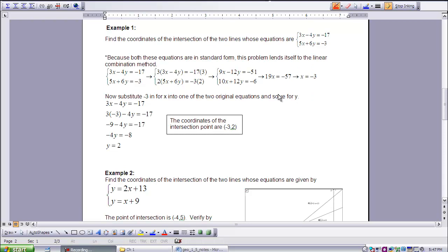Here I have example one, the guided example from page 34 in your reading. We want to find the coordinates of the intersection of the two lines whose equations are 3x - 4y = -17 and 5x + 6y = -3. We have a system of two linear equations, and we know they will only intersect in one point, or at most one point. Because both equations are in standard form, it's best to use the linear combination method for solving this system.